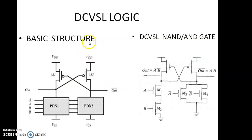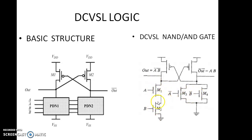The next DCVSL logic. Here PMOS networks are latched. Then here two pull-down networks. Inputs are applied to this pull-down networks, that means N logic blocks. From here we will get the output 'out' and from here we will get the output 'out bar'. Here one example: NAND and gate. Here A and B are connected in series. Here A and B are connected in parallel. True inputs are applied to one terminal; complementary inputs are applied to the other terminal. From here we will get the output AB all bar; from here we will get the output out bar = AB. This is DCVSL NAND and gate.